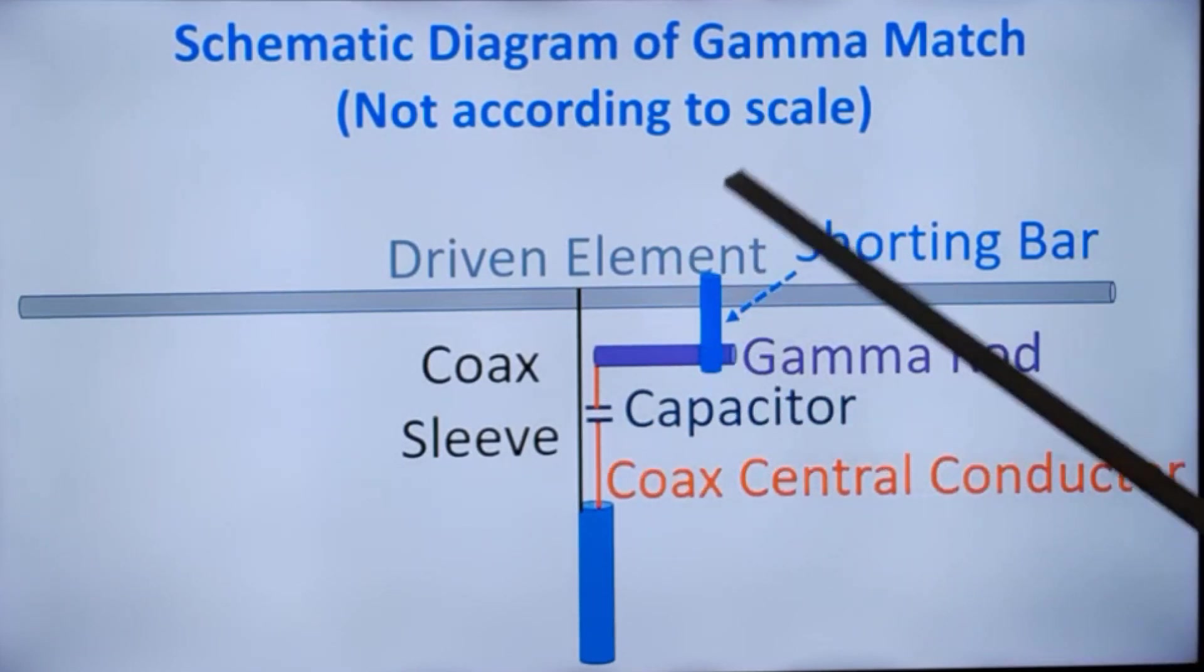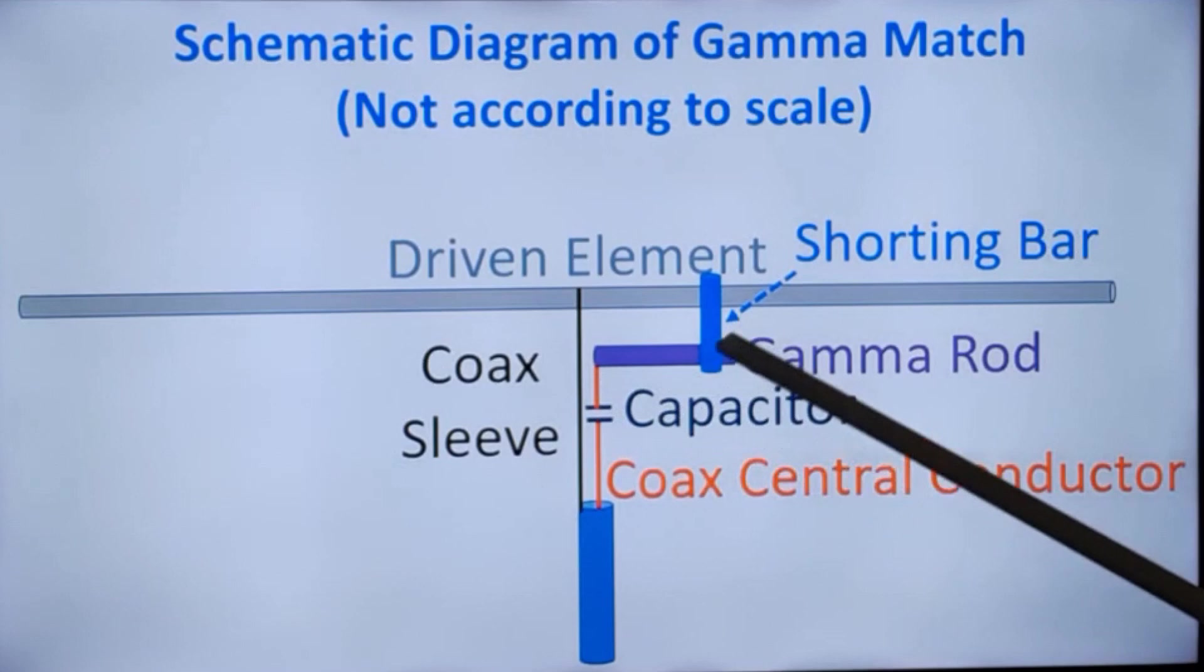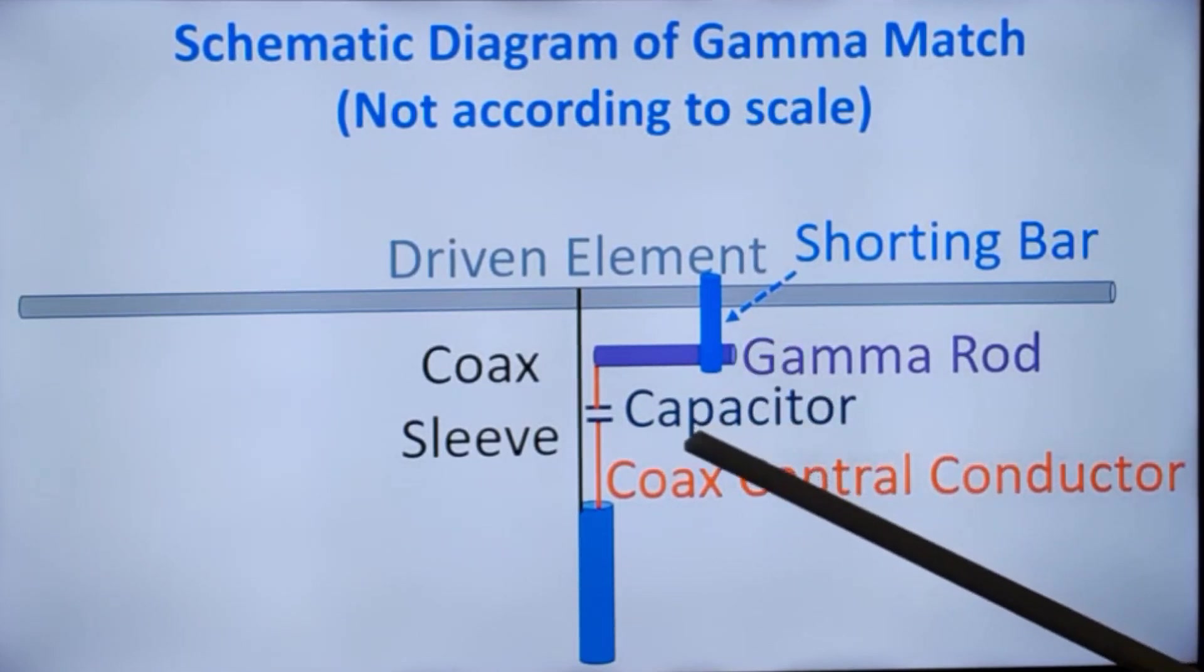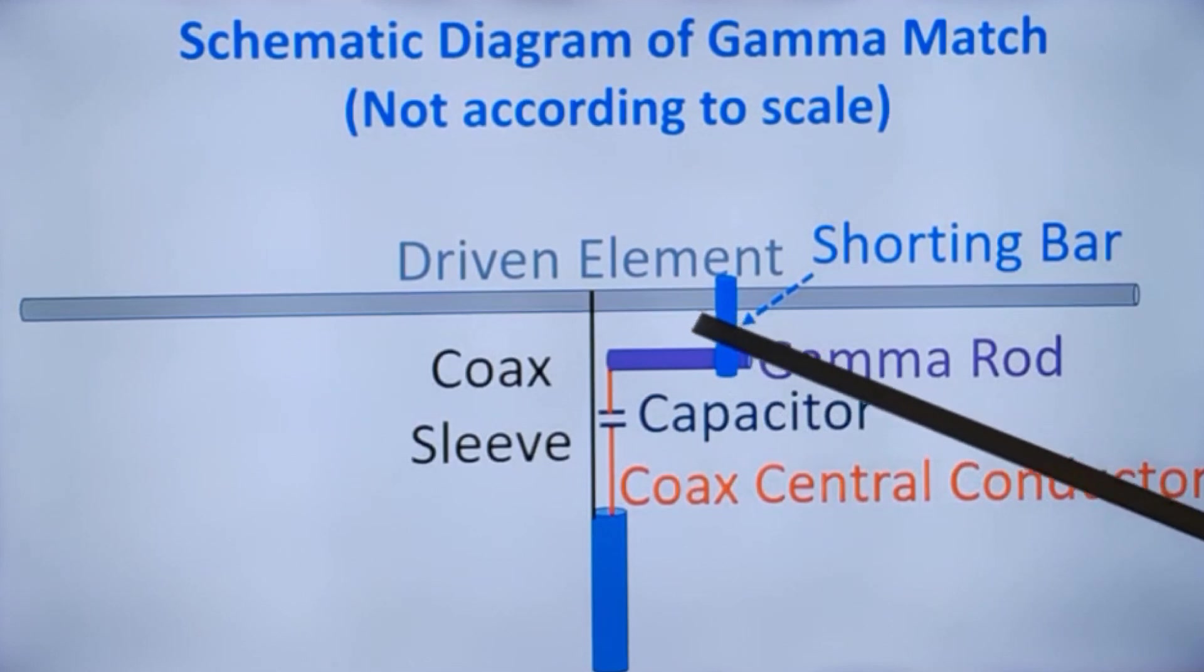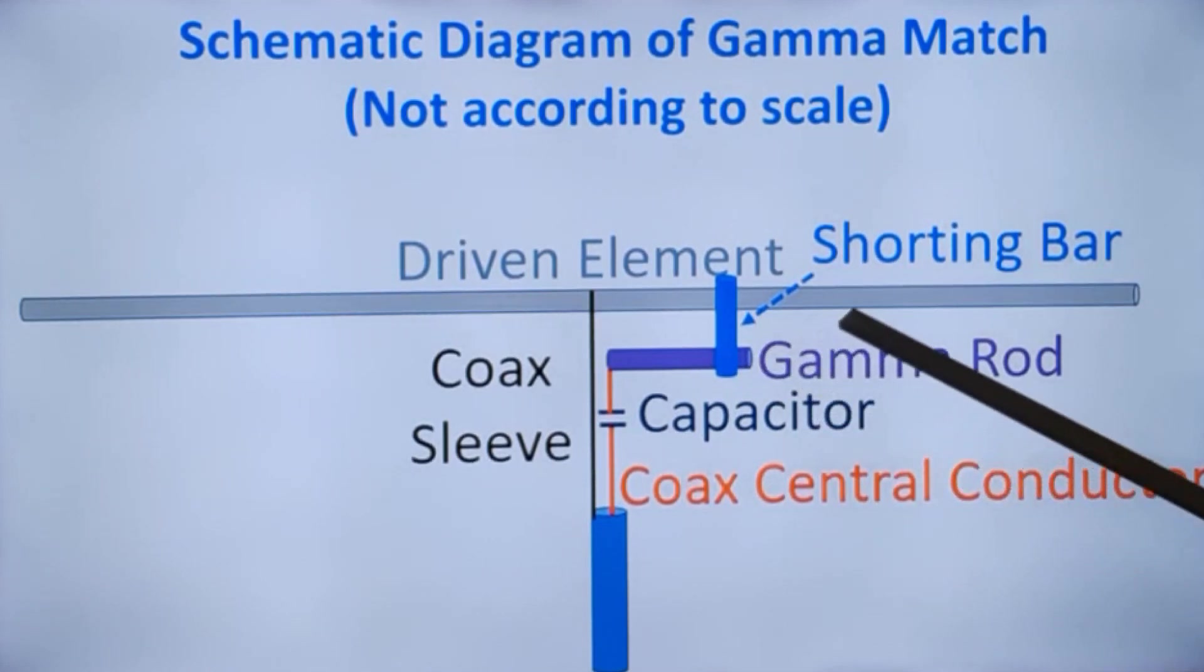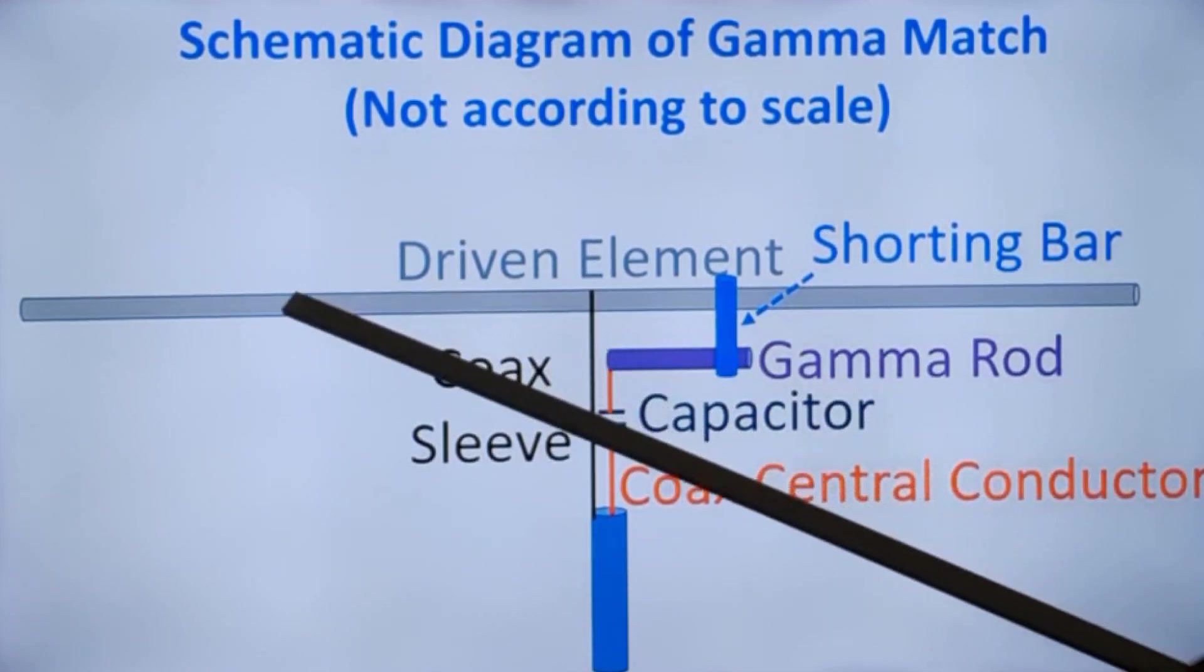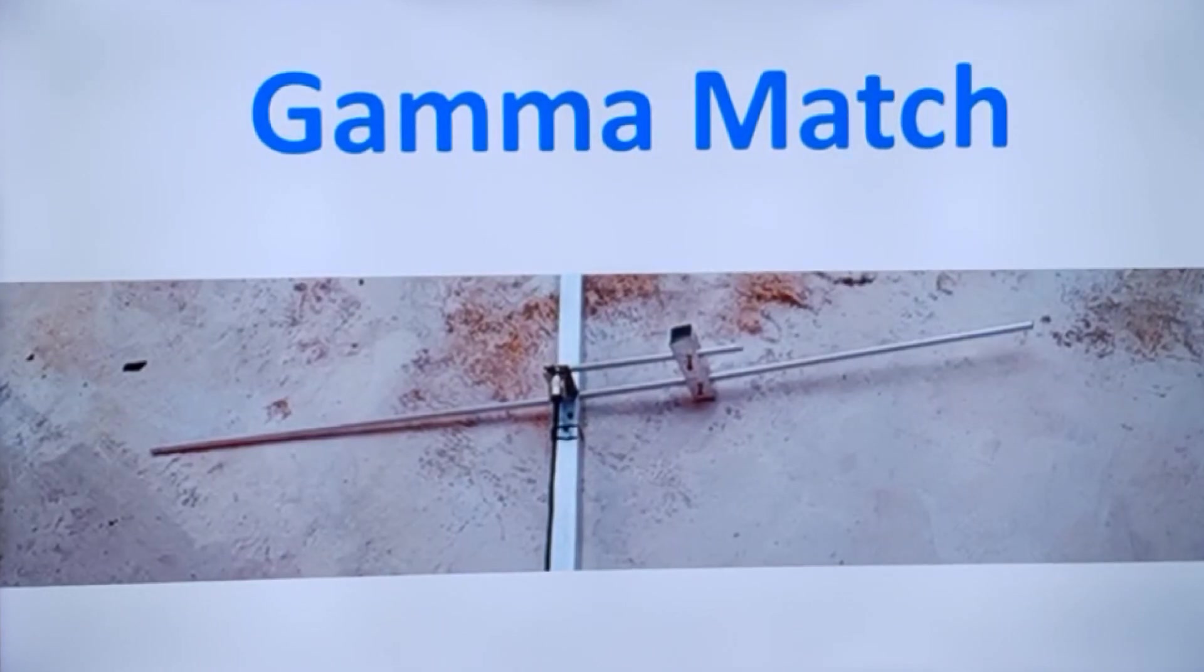This is implemented usually for HF frequencies but can also be used for VHF. The length of the gamma rod will be around 5% of the length of the driven element. The spacing between the gamma rod and the driven element will be about 0.7% of the length of the driven element.